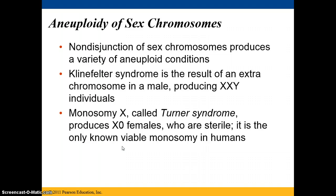Aneuploidy of sex chromosomes resulting from non-disjunction can produce a variety of conditions. Klinefelter syndrome results from an extra chromosome in a male, producing an XXY genotype. Monosomy X, also called Turner syndrome, produces X0 females, meaning they have only one X chromosome and are sterile. It's the only known viable monosomy in humans — the only condition in which a person can have one copy of one chromosome and survive. Turner syndrome and Klinefelter syndrome are very, very rare conditions.